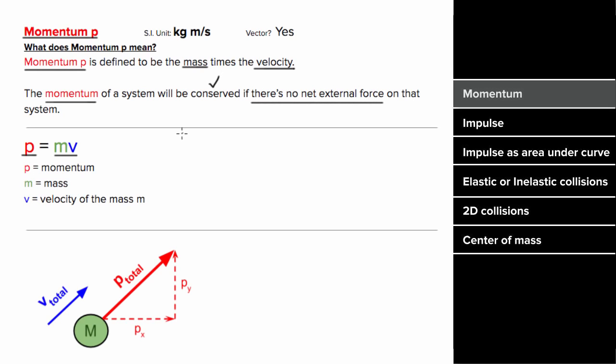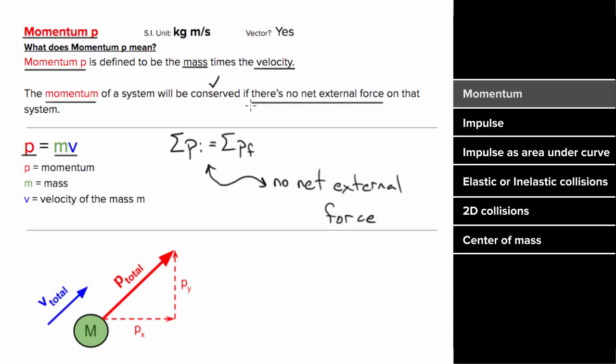In other words, the total initial momentum of that system would equal the total final momentum of that system. So momentum will be conserved if there's no net external force.